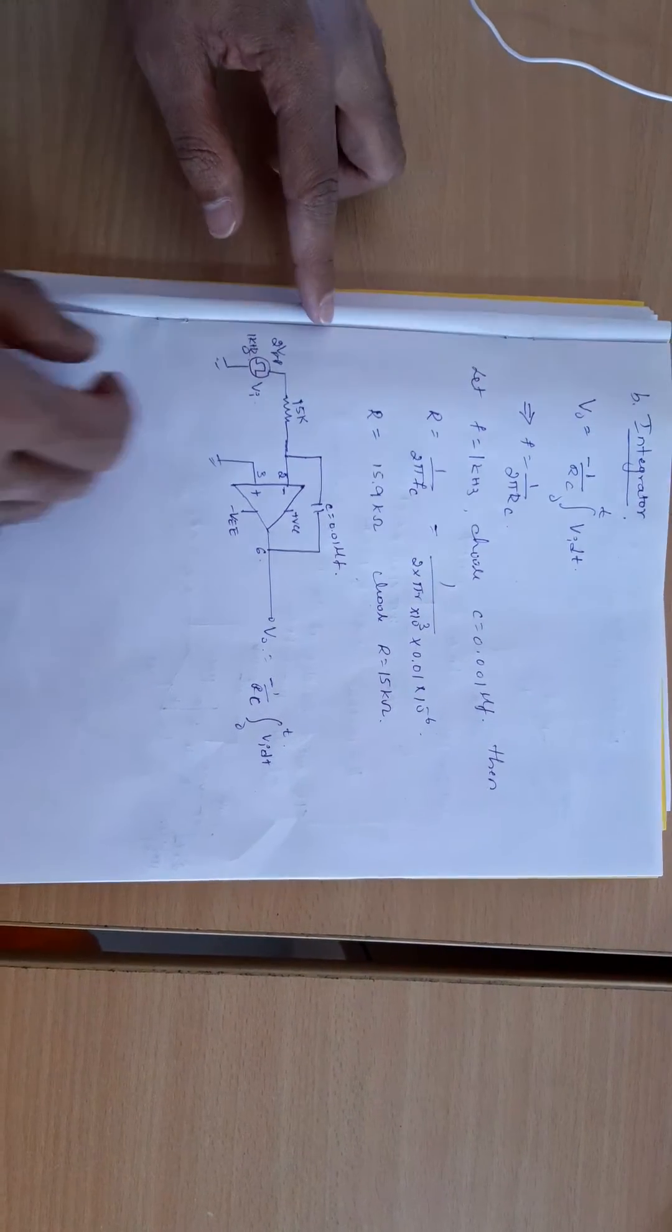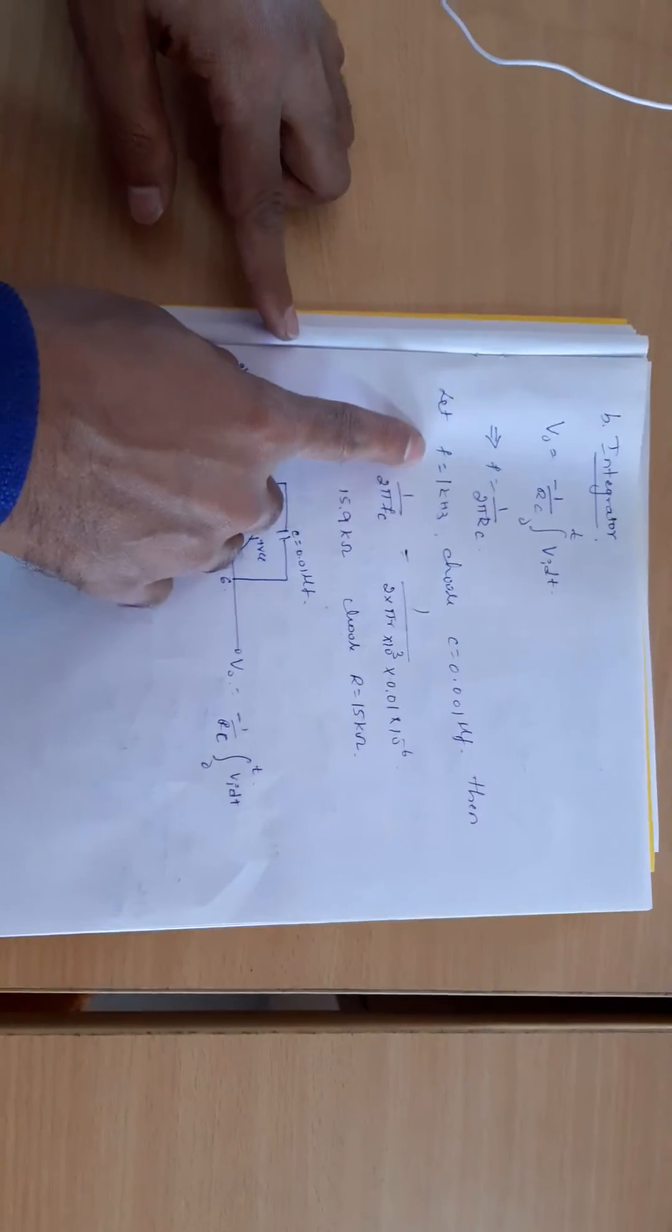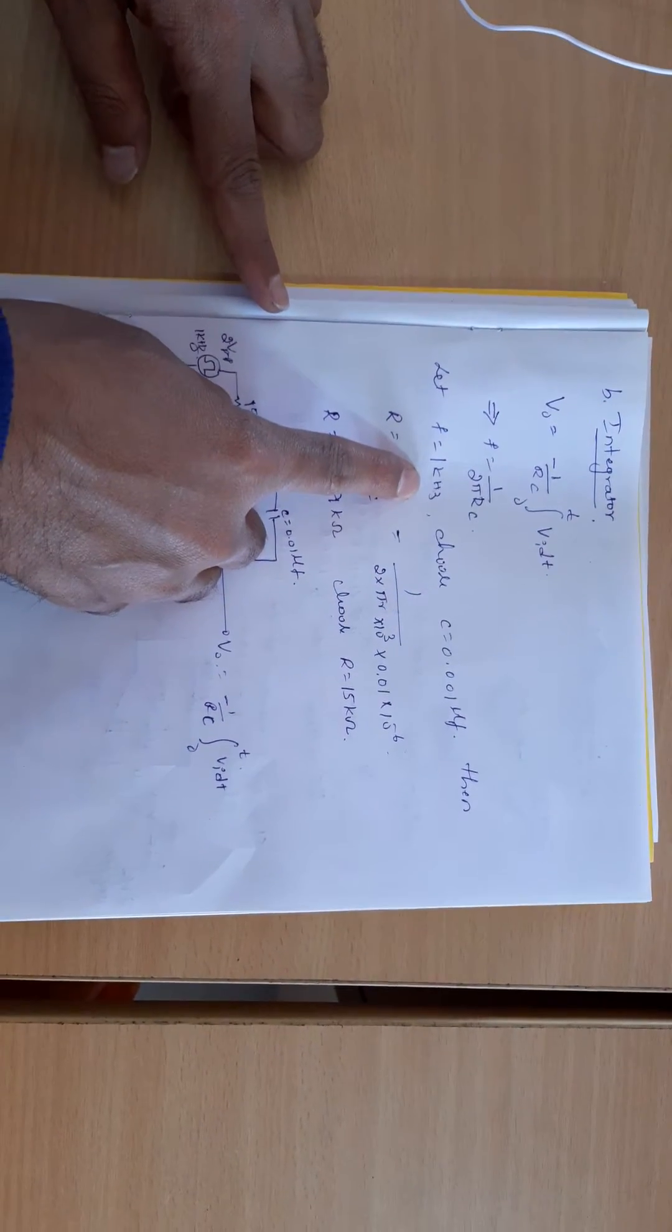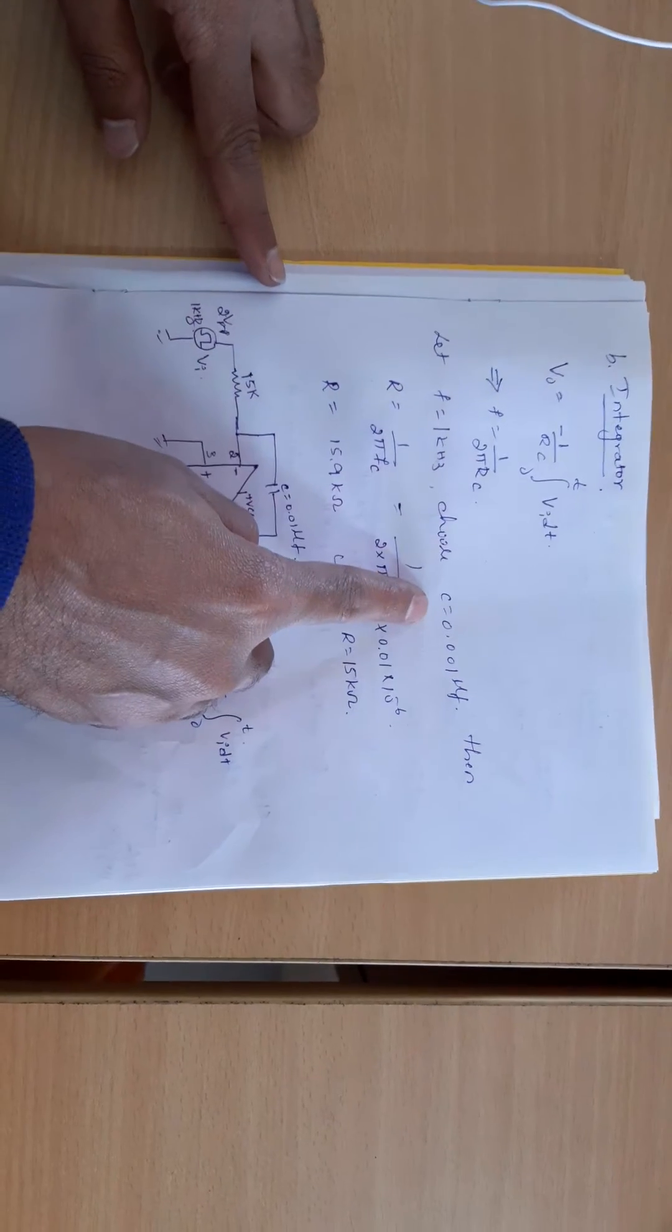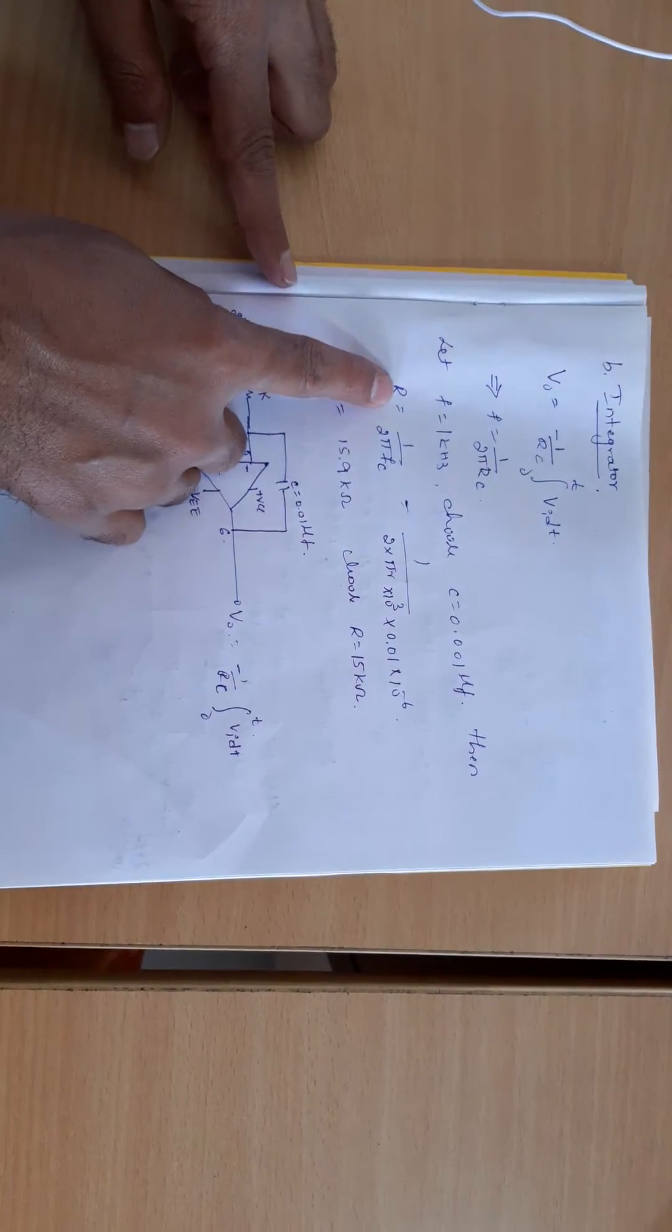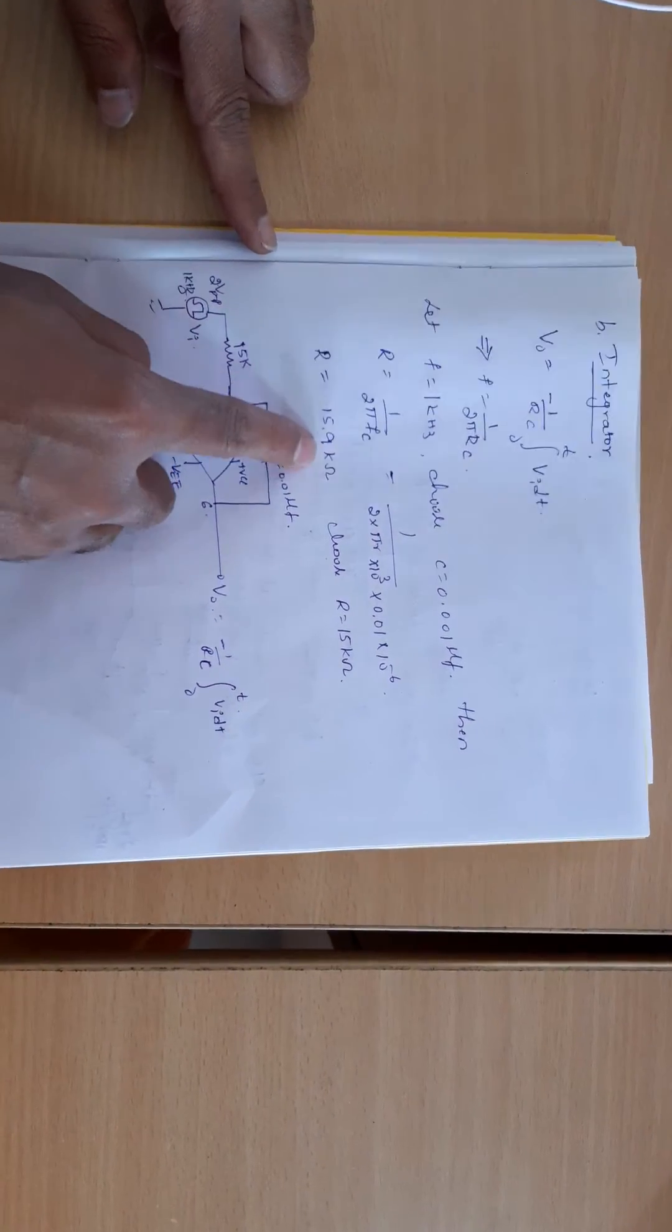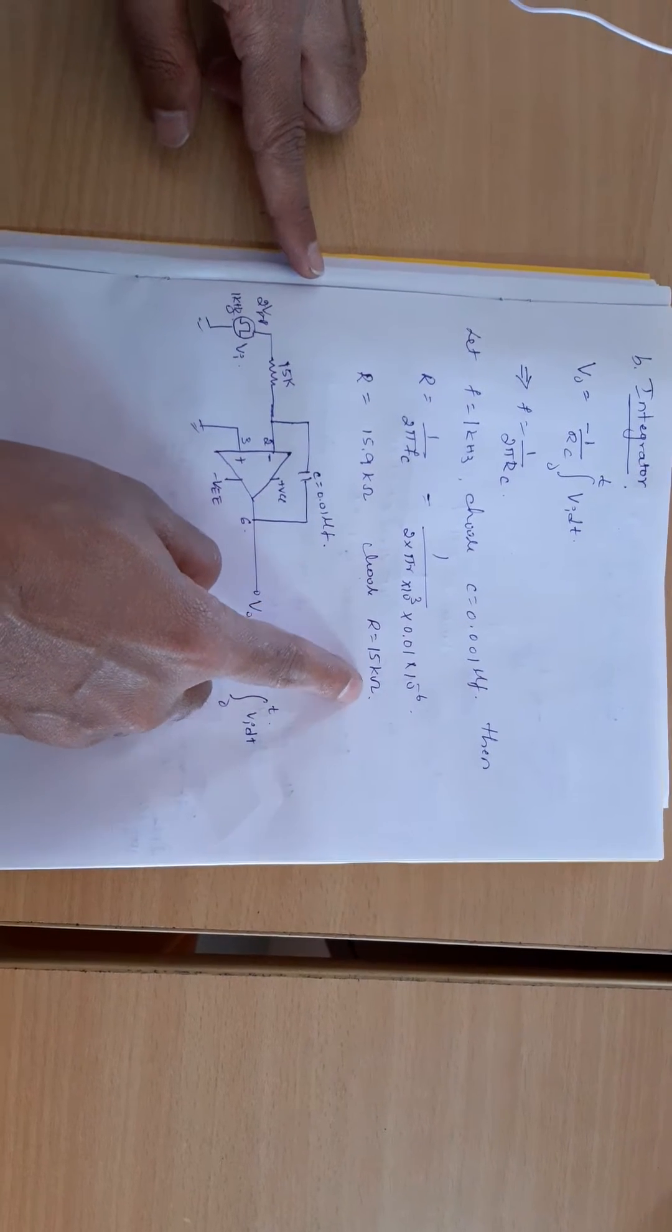We have the formula to find frequency: f equals 1 by 2 pi RC. We are assuming f is 1 kilohertz. Choose any value of C, that is 0.001 microfarad. Then R equals 1 by 2 pi f into C. The R value will be 15.9 kilo ohm, and the nearest standard value is 15 kilo ohm.